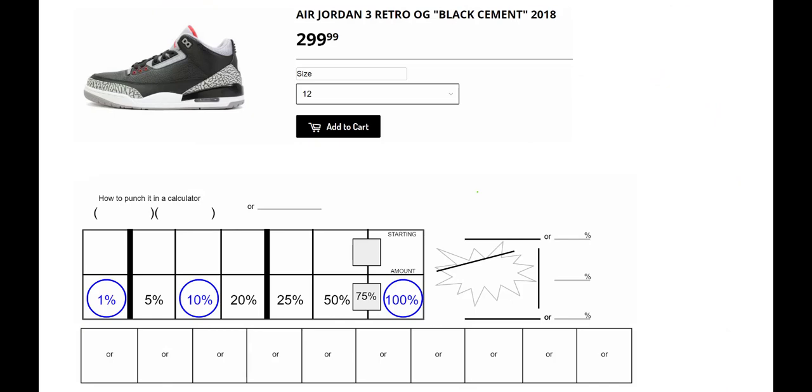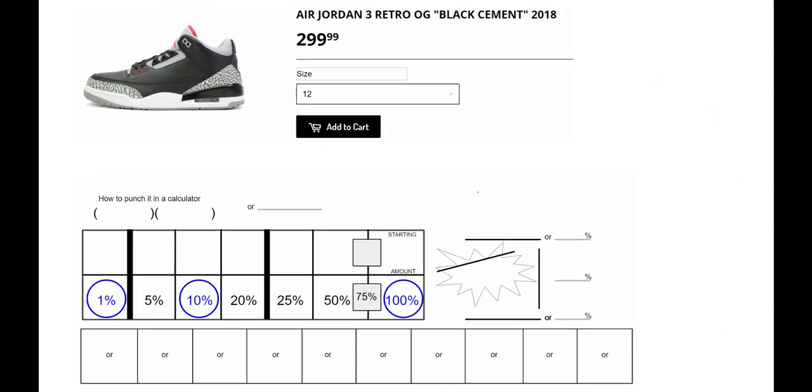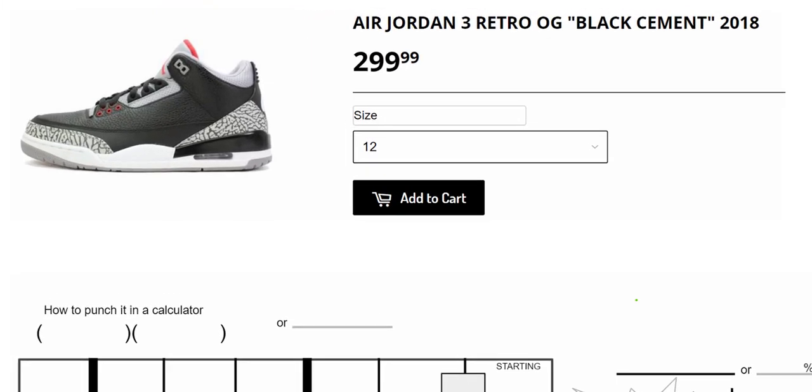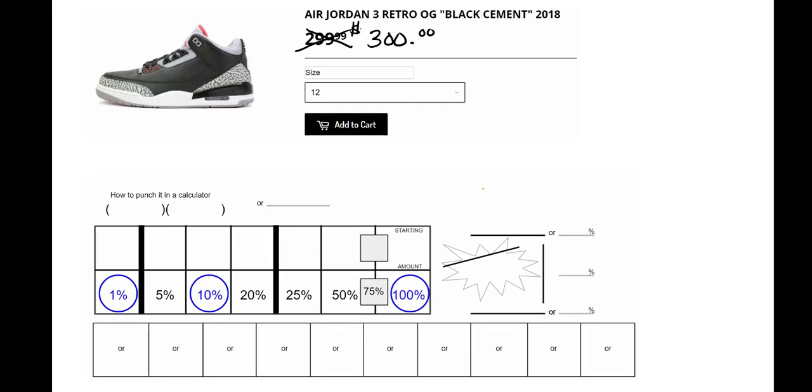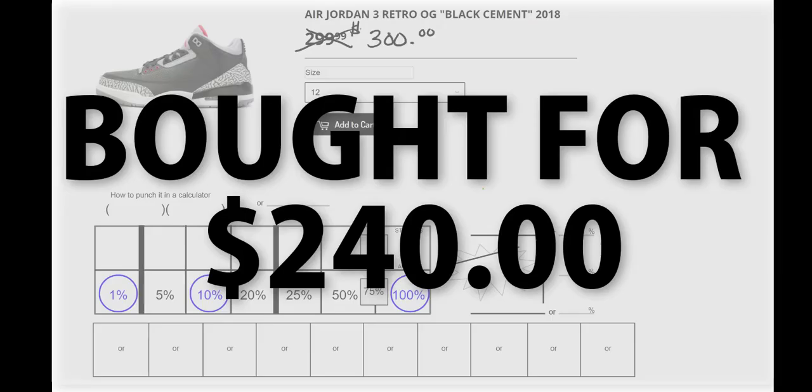So let's grab an example, like a pair of Jordans that I have here, the Cement Black Retro 3 Jordans. And the one change I'm going to make is that I'm not going to play this whole game where it looks like it's cheaper than it really is. These are $300 sneakers. So I'm changing that. Now, let's pretend that we were able to get these sneakers at, let's say, $240.